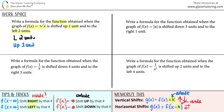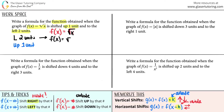The original function was f(x) equals the square root of x. To shift to the left two units, I add 2 inside the function — inside the square root. So it becomes f(x) equals the square root of x plus 2.